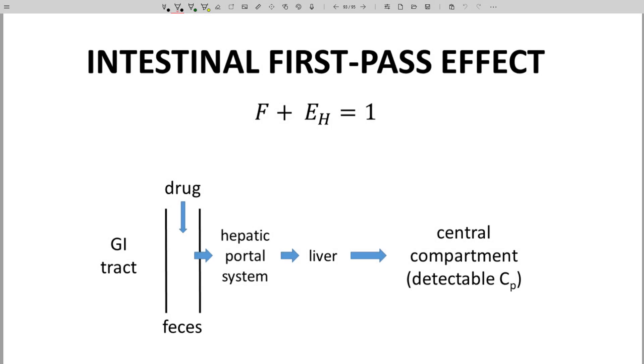The equation on the top line describes a general idea that often holds true. The sum of bioavailability, F, and the hepatic extraction ratio, EH, equals 1.